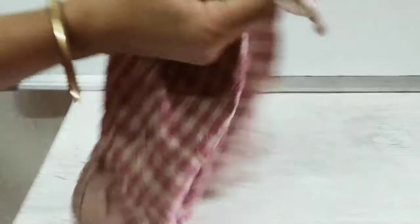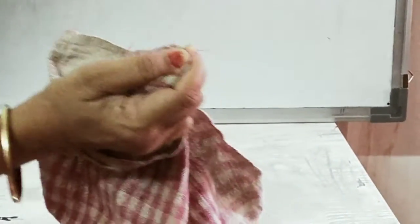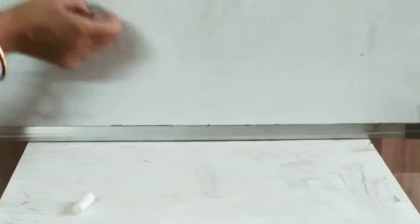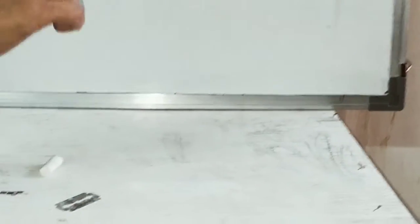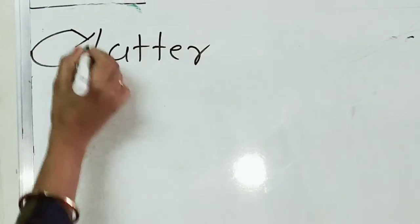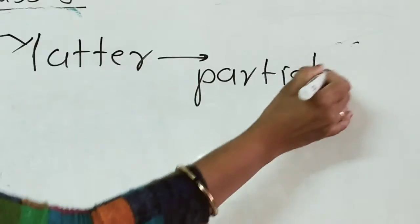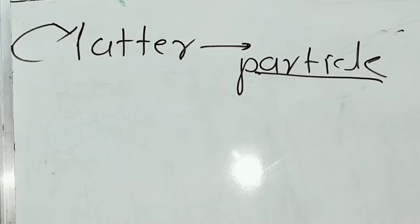I have one cloth. This cloth is also made from small, small particles — see this thread. From all this — observe the chalk, the table, the piece of cloth — you understand one thing: everything is made from particles. Matter is composed of small, small particles. Is this thing clear to all of you?